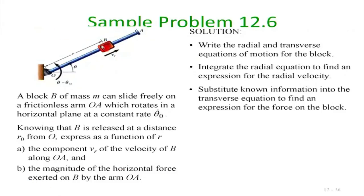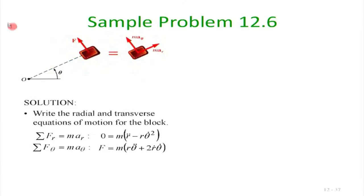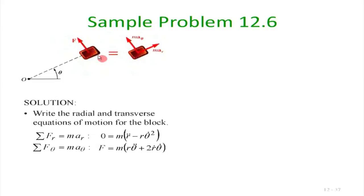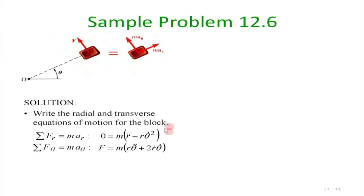From the radial equation: vᵣ·(dvᵣ/dr) = r·θ̇₀². Integrating from r₀ (where the mass starts at rest, vᵣ = 0) we get: vᵣ² = θ̇₀²·(r² - r₀²). This gives vᵣ as a function of r. At r = r₀, vᵣ = 0, confirming initial conditions.